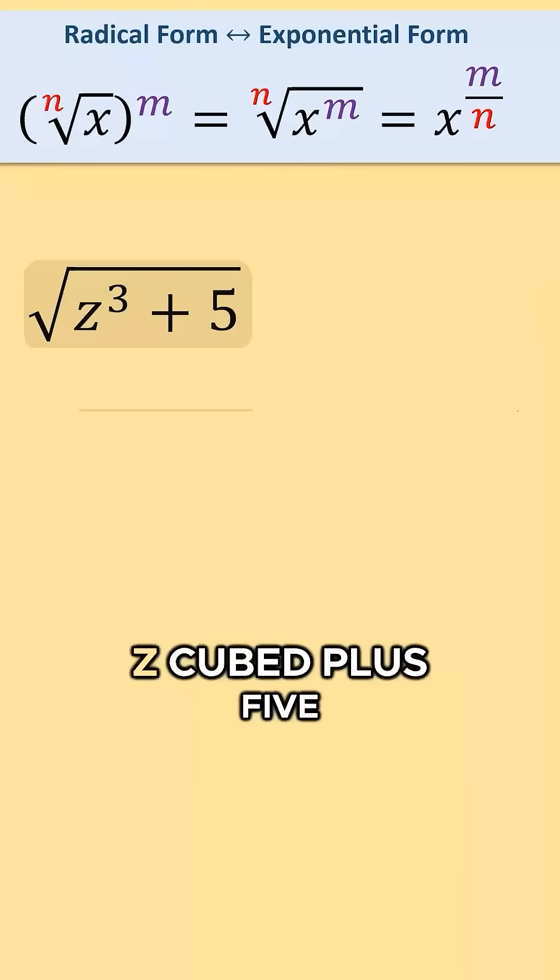Let's move on to the square root of z cubed plus 5. With no number in the index position, we know our index is 2.